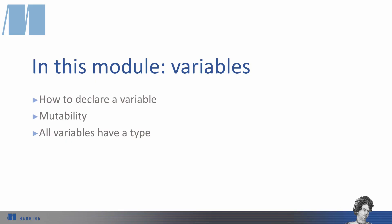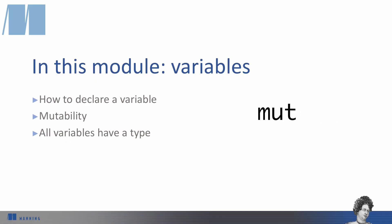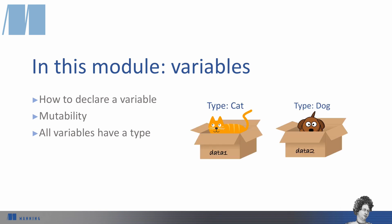In this module, we've covered how to declare a variable, how to make a variable mutable with the mut keyword, and how every variable has a type. In the next video, we'll talk about primitive data types.